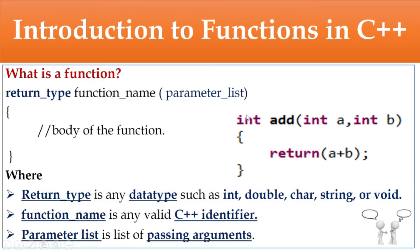Here you can see an example. Int is the return type — an integer data type. Add is the name of the function. Int a, b are the parameter list, or passing arguments. Since the return type is integer, we return a value using 'return a + b'. You can use any number of arguments — a, b, c, d — based on your requirements.